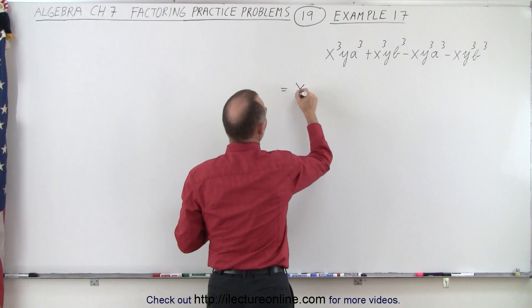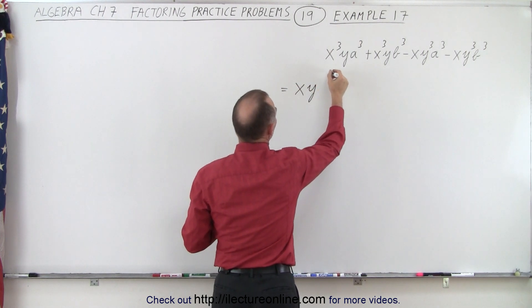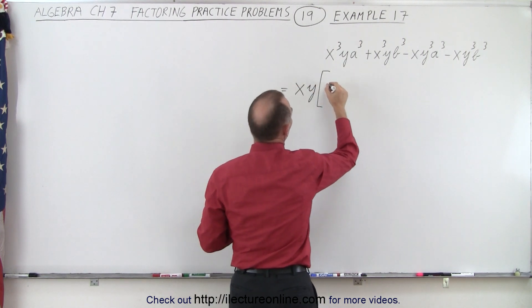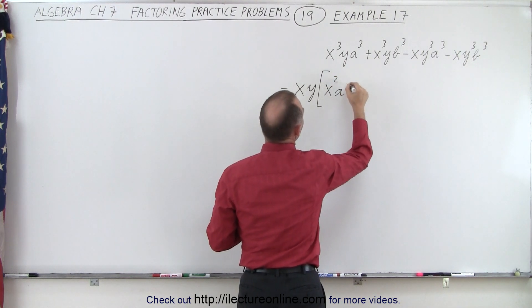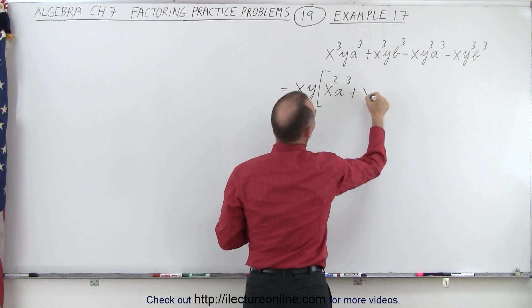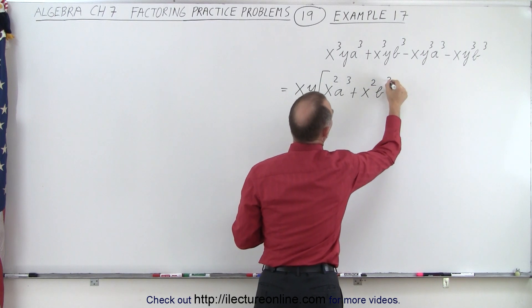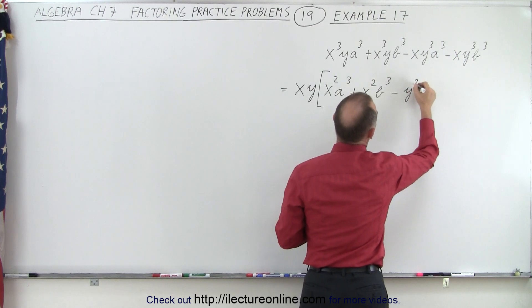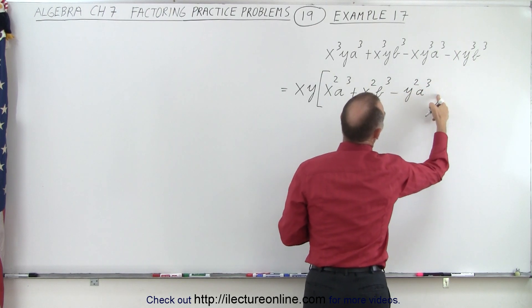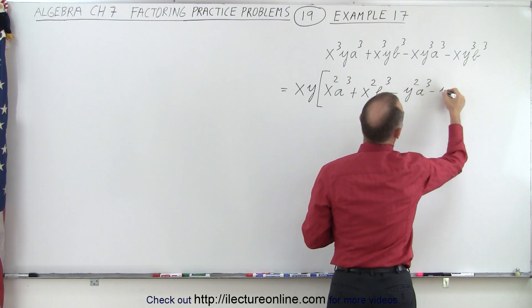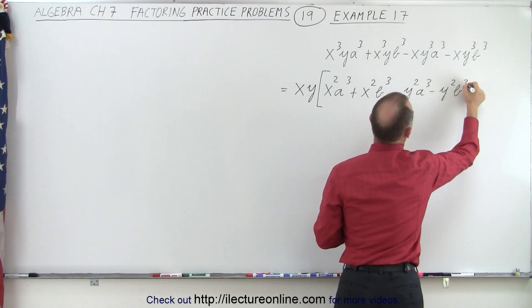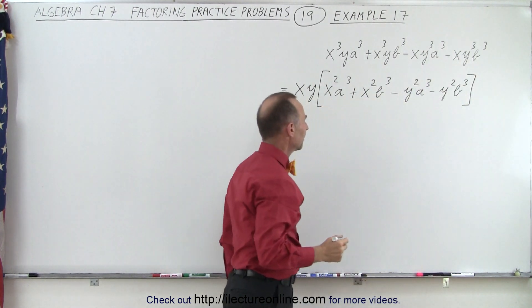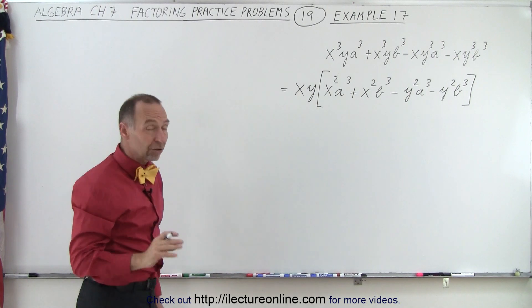So x times y is a common factor, which leaves us with an x squared, the y is gone, a cubed plus x squared b cubed. And here we have a minus y squared a cubed. And here we have a minus y squared b cubed. All right. That looks a little bit better.